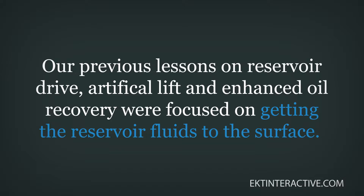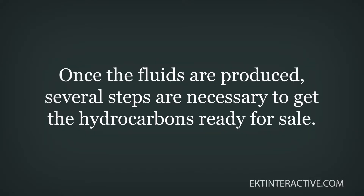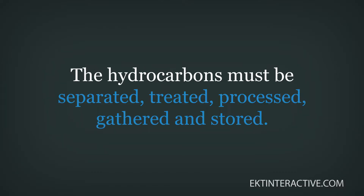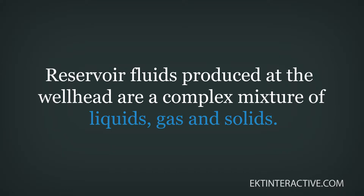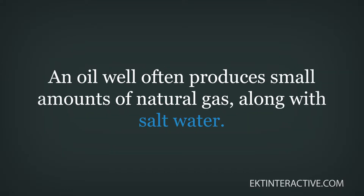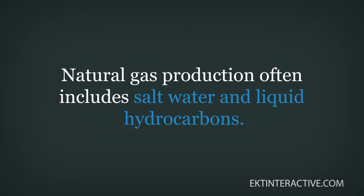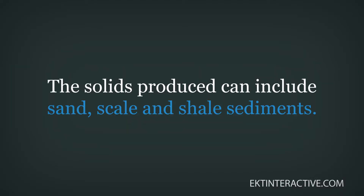Our previous lessons on reservoir drive, artificial lift, and enhanced oil recovery were focused on getting the reservoir fluids to the surface. Once the fluids are produced, several steps are necessary to get the hydrocarbons ready for sale. The hydrocarbons must be separated, treated, processed, gathered, and stored. This lesson will discuss the processes and surface facilities used to perform these tasks.